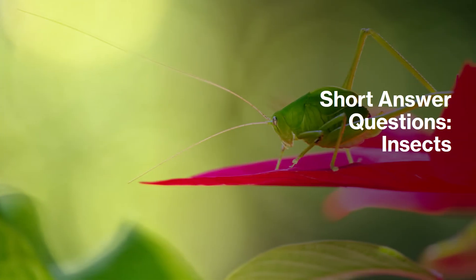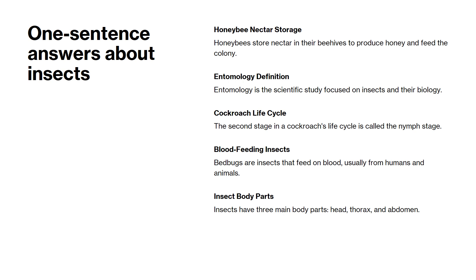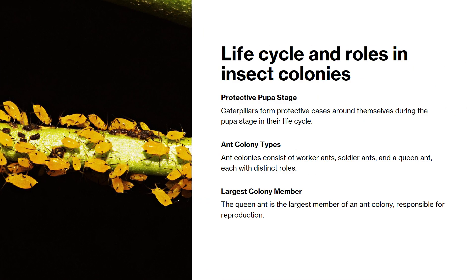Let's move on to short answer questions about insects, covering the life cycle and different roles insects play in their colonies. Honeybees store nectar in beehives. The study of insects is called entomology. The second stage in a cockroach's life cycle is the nymph. Bedbugs are insects that feed on blood. Insects have three main body parts: head, thorax, and abdomen. During the pupa stage, caterpillars form a protective case. Ant colonies have worker ants, soldiers, and a queen — the queen ant is the largest member and is responsible for reproduction.